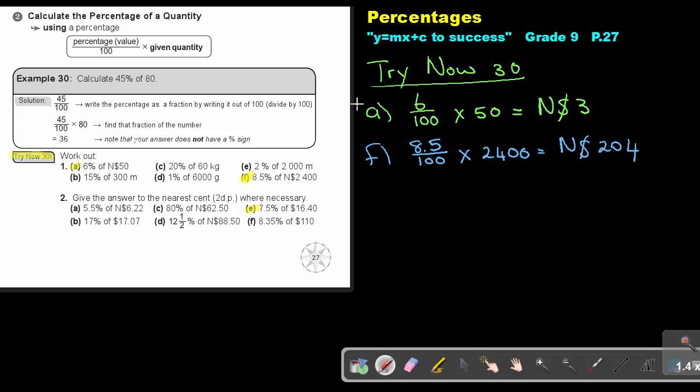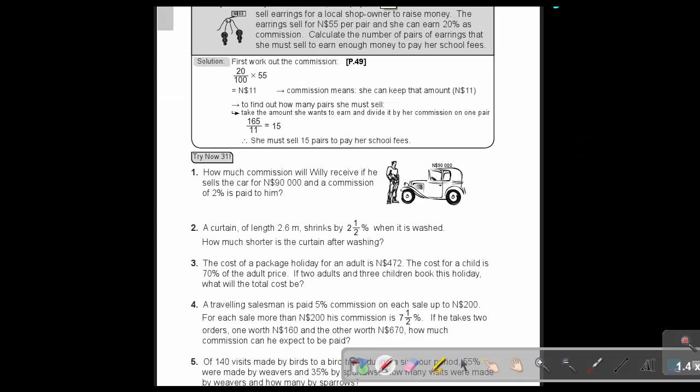Let's look at number 2, this was all number 1. If we look at number 2E, 7.5% of 16. Give your answer correct to the nearest if necessary. So it's 7.5 still out of 100 and times 16.40, and my answer will be, remember it's money. So if this is in dollar, then this will also be 1.23, and remember, money I always approximate to two decimal places.